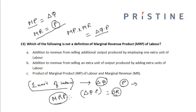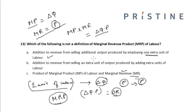Looking at the options: Option A says the marginal revenue product is the addition to revenue from selling additional output produced by employing one extra unit of labor — this is the correct definition of MRP, and it equals the product of marginal product and marginal revenue when price is constant. However, the marginal revenue product is not the addition to revenue from selling one extra unit of output produced by adding an extra unit of labor. The key distinction is one extra unit of labor, not one extra unit of output. Hence the correct answer is Option B, as it is not a definition of the marginal revenue product of labor.